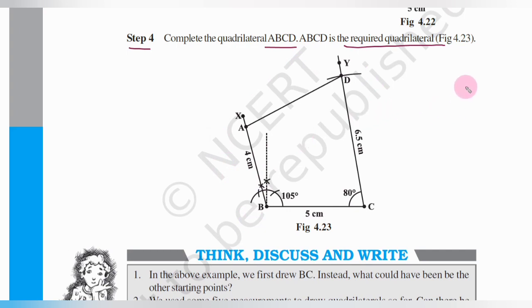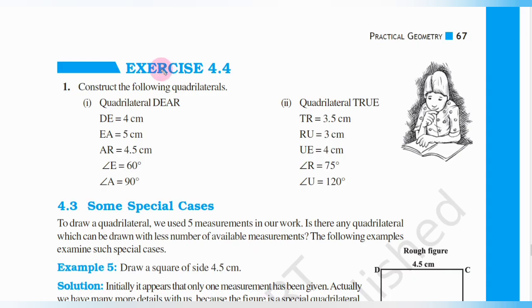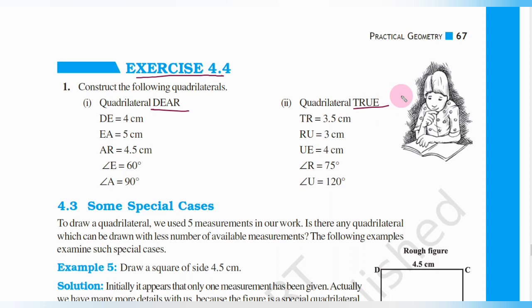This is how you have to draw the quadrilateral. Understood children? Now let us go into the exercise. Exercise 4.4 — Question 1: Construct the following quadrilaterals. Here we can construct two quadrilaterals: the first one is quadrilateral DEAR, and the second one is quadrilateral TRUE. Both involve three sides and two included angles.